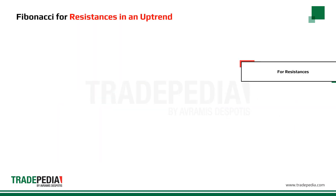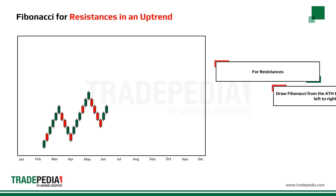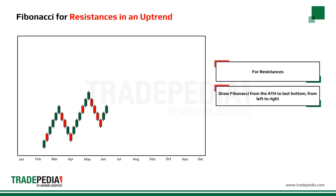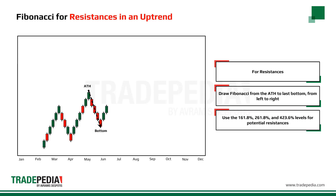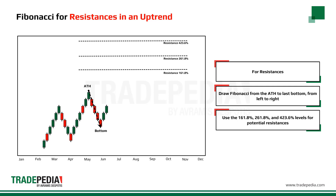For resistances in an uptrend, draw Fibonacci from the all-time high to the last bottom, always from left to right. Use the 161.8%, 261.8%, and 423.6% levels for potential resistances.